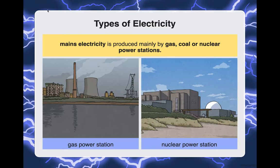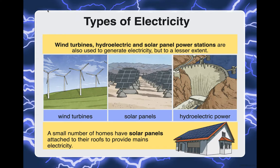Mains electricity is produced mainly by gas, coal, or nuclear power stations. Wind turbines, hydroelectric, and solar panel power stations are also used to generate electricity but to a much lesser extent, giving out less power. A small number of homes also have solar panels attached to the roofs, and that provides their main source of electricity.